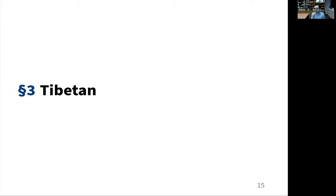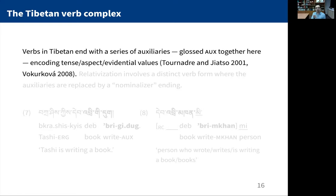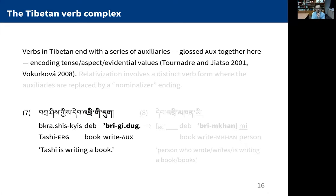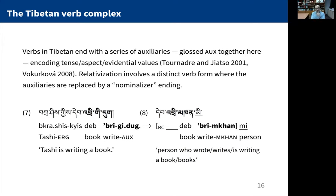Now for something completely different — let's go to Tibetan. Tibetan is a strongly head-final, verb-final language. Verbs end with a series of auxiliaries which encode tense, aspect, and famously evidential values. For example, in sentence 7 we have an SOV sentence: Tashi is writing a book. Suppose we want to relativize over its agent — we get example 8: tep-ti-ken-mi. We keep the verb stem, but in relativization you drop all the aspectual, tense, and evidential auxiliaries and get this extra suffix — here it is ken — which is traditionally called a nominalizer ending in the Tibetan literature.